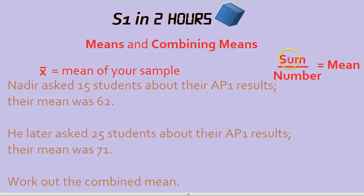To get the mean, you add up the numbers and divide by how many there are. But what about combined means? Let's take this example.